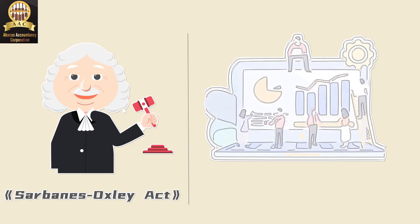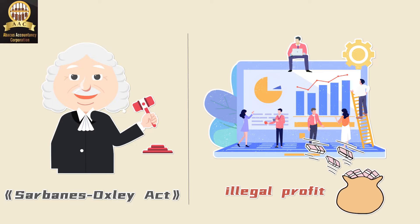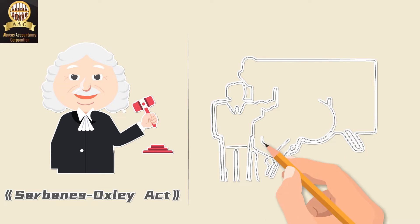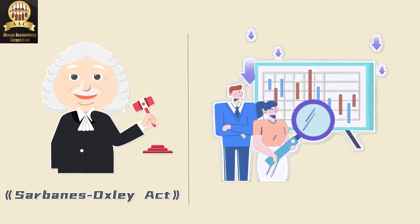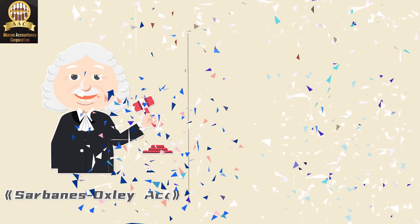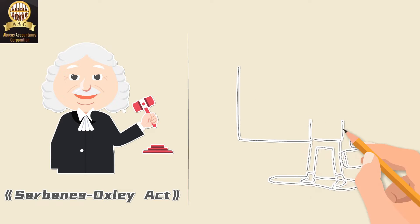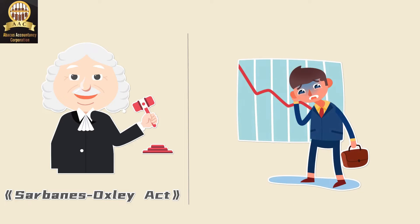overstating profits in financial statements and covering up debts and losses. The stock market became volatile due to the scandal, and Enron's stock price dropped from more than $90 per share to less than $1 per share. This financial scandal at Enron and other companies rocked the financial markets, shaking investor confidence in the trustworthiness of corporate financial statements.